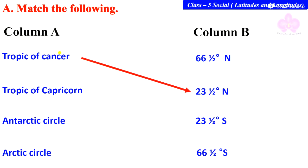The matchings are: Tropic of Cancer 23½° North, Tropic of Capricorn 23½° South, Antarctic Circle 66½° South, and Arctic Circle 66½° North.